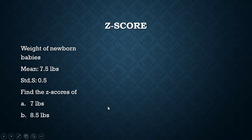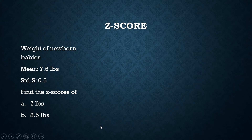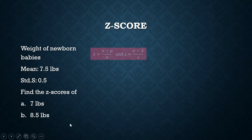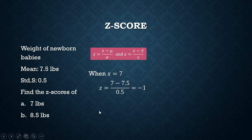Example: It's standard practice in hospitals to get the weight of a newborn baby. Based on a sample, the mean is 7.5 pounds and the standard deviation is 0.5. What is the equivalent Z-score of 7 pounds? If you have a newborn baby whose weight is 7 pounds, what is the equivalent Z-score? We just follow the formula: for X equal to 7 pounds, its Z-score is negative 1.